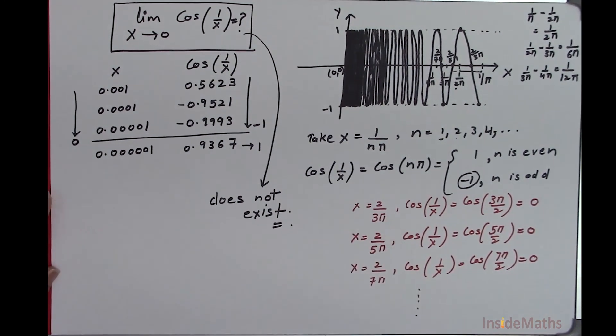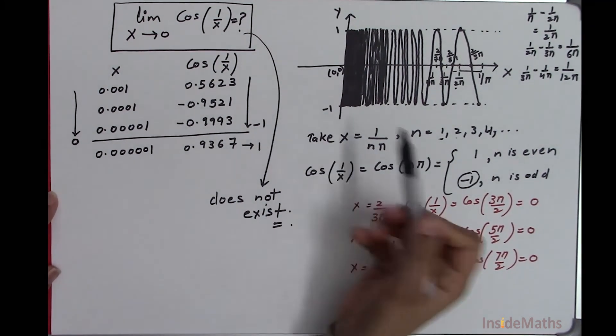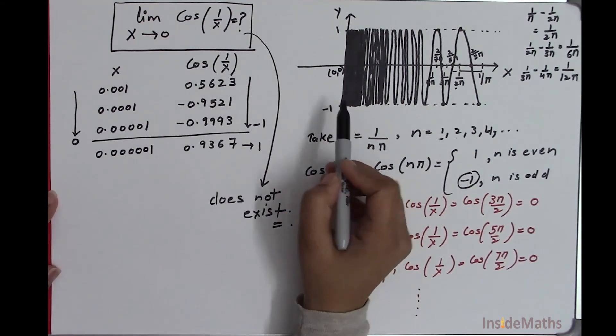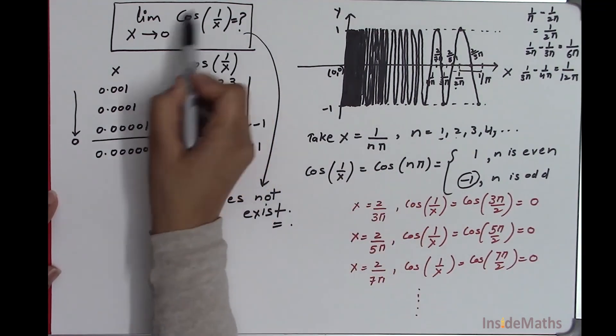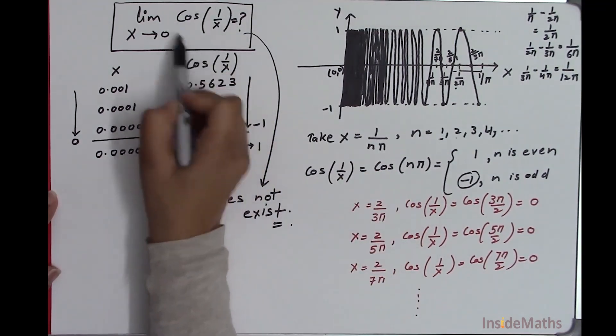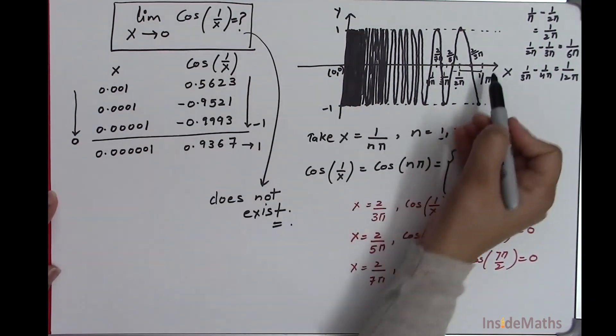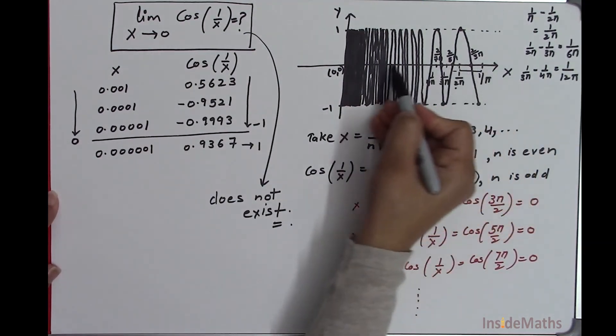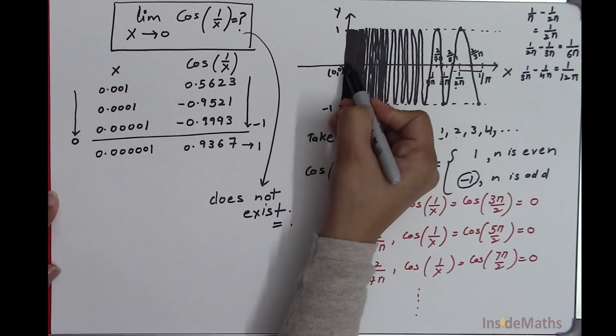This is also called the strange behavior of this function as x is getting closer to 0.